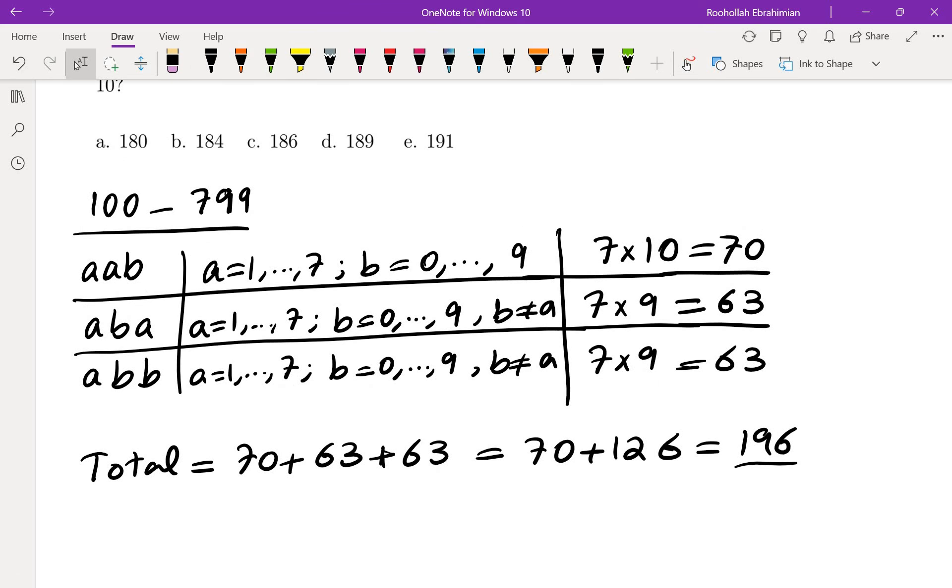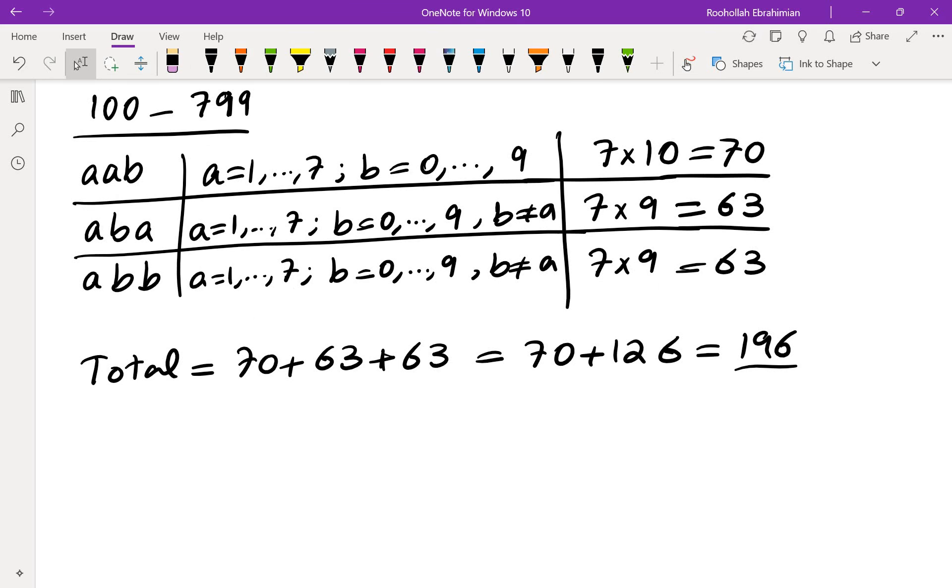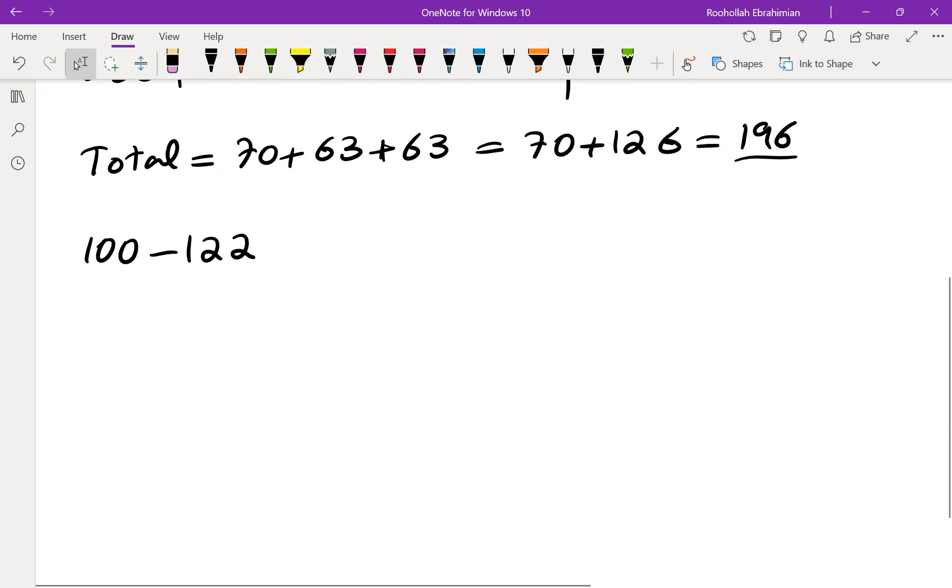Okay, so now let's look at the numbers from 100 to 122 and see which ones have repeated digits. We're going to subtract those. Okay, so if the number is 100, or it could be 100 or it could be 101, so that gives us a total of 2.